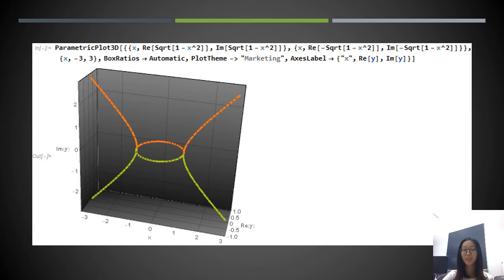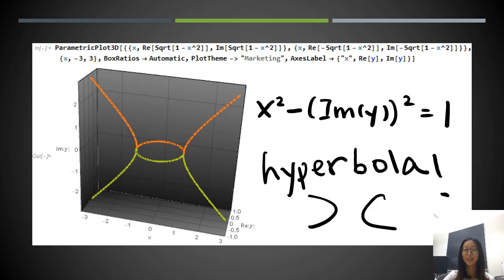You may ask, what's exactly the curve outside of our usual circle that is C-shaped? By looking closely at the equation of this part, which is x² - (Im(y))² = 1, we know that it's a hyperbola in analytical geometry. You may want to guess or calculate the asymptotic lines of this hyperbola.